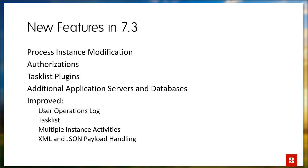Let's look at the concrete new features in this release. First, we have something called process instance modification. Then we have authorizations, the option of plugins, and customizing task lists the way you'd like them to be. We've also added even more application servers and databases that we officially support with Camunda. There are many more improvements as well, but those first four are worth taking a close look at.